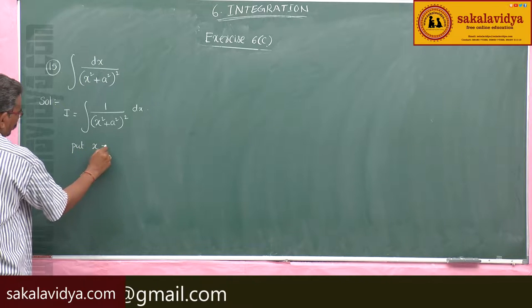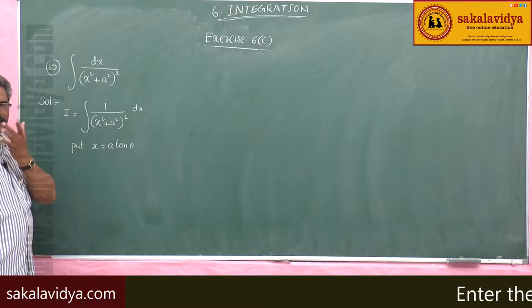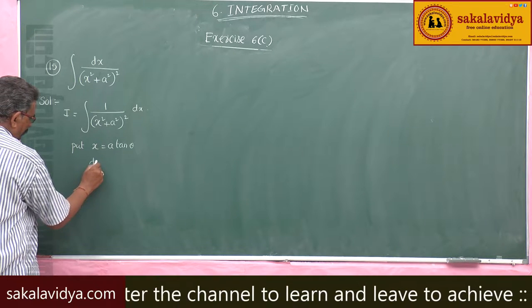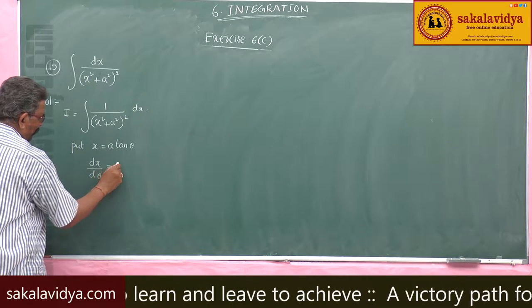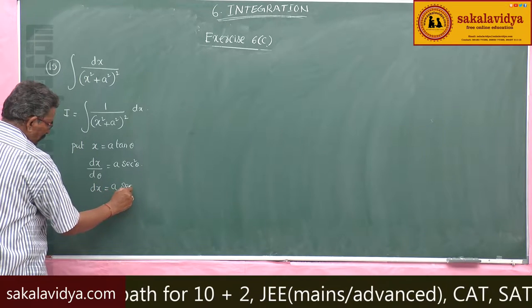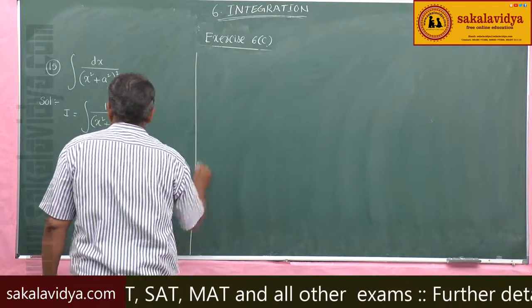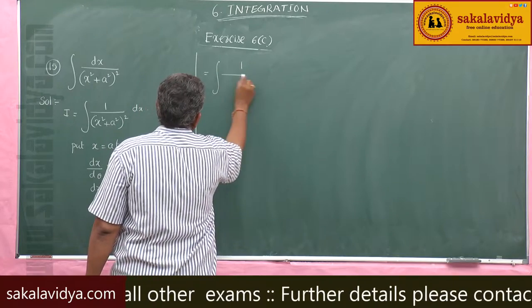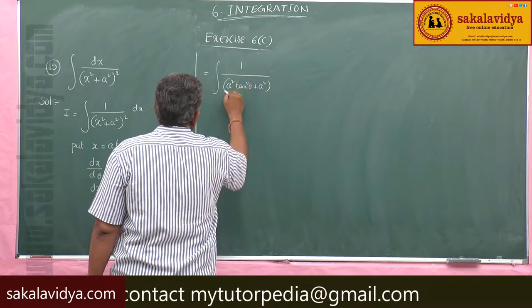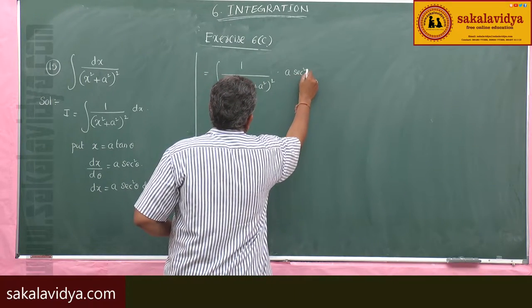Now, put x equal to a·tan θ. To find dx, differentiate both sides with respect to θ. dx/dθ equals a·sec²θ, so dx becomes a·sec²θ·dθ. Substituting: integral of 1 by (a²·tan²θ + a²)² into a·sec²θ·dθ.